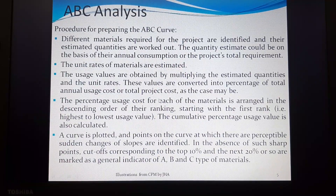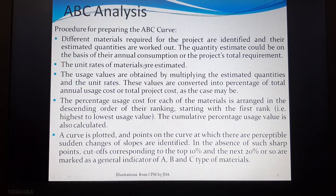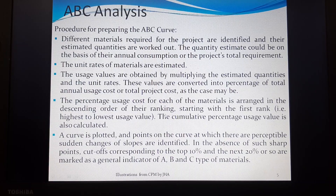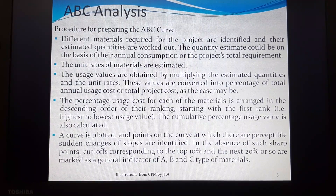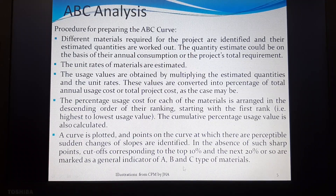To prepare ABC analysis systematically: different materials required for the project are identified and their quantities are estimated; unit rates of materials are estimated; usage values are calculated; then percentage of usage and cumulative percentage are computed. A curve is then plotted and points on the curve where there are sudden changes in slope are identified and categorized as Class A, B, or C.